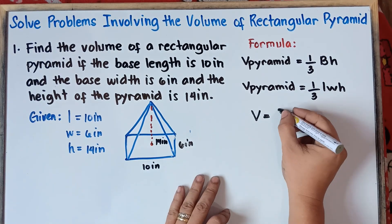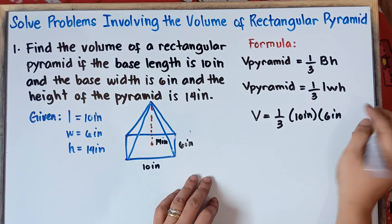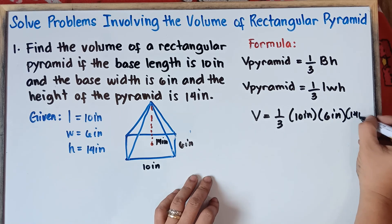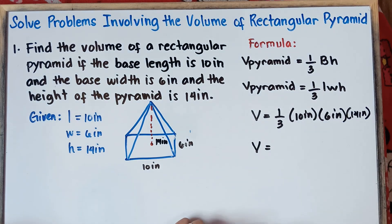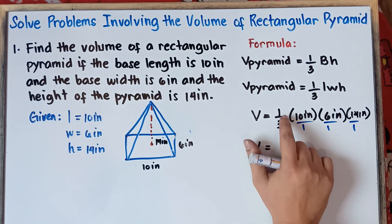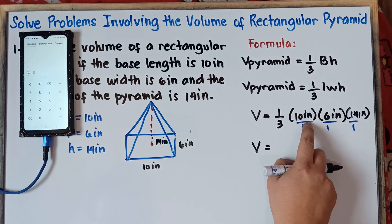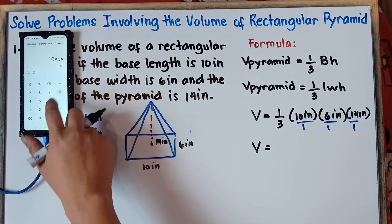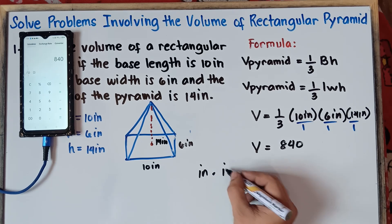So volume equals one-third, then our length is 10 inches, multiplied by the width of 6 inches — if you have variables close to each other, it means multiplication — times the height of 14 inches. So simply multiply the numerators: 1 times 10 times 6 times 14. We can ignore 1 since 1 times 10 is still 10. So we multiply 10 times 6 times 14. The answer is 840, and the units are inches times inches times inches.